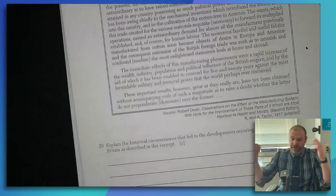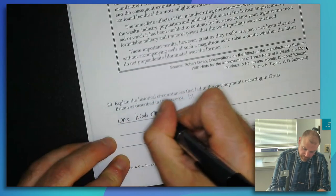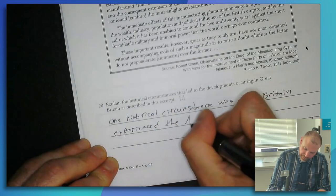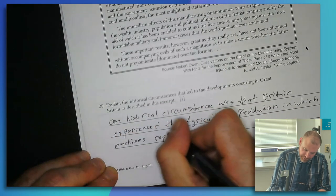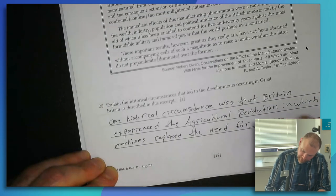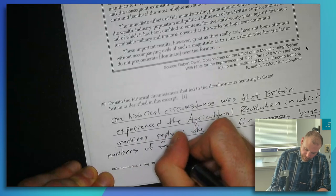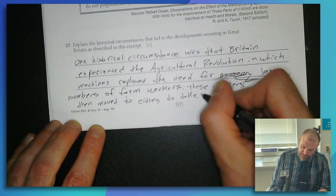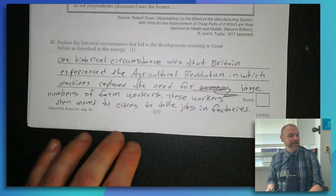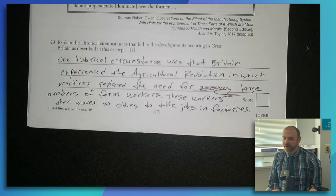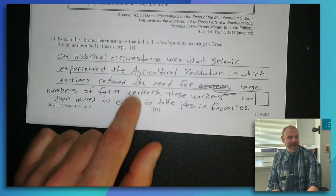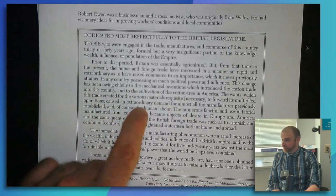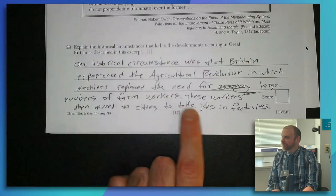Watch how we answer this one. One historical circumstance was that Britain experienced the agricultural revolution, in which machines replaced the need for large numbers of farm workers. These workers then moved to cities to take jobs in factories. When you do historical circumstances, ask yourself what happened beforehand and then try to connect what you put to what you see in the source — it's an explanation for why people were willing to work in factories.